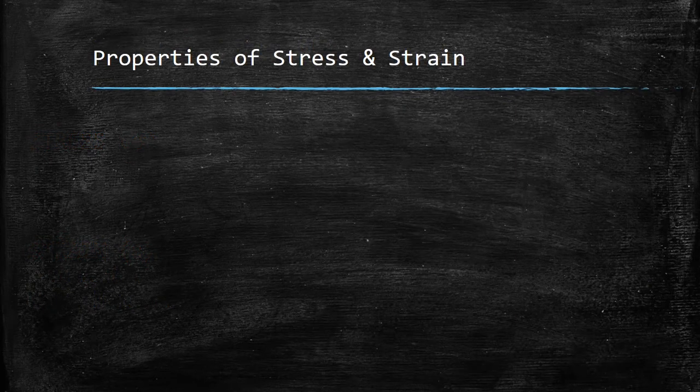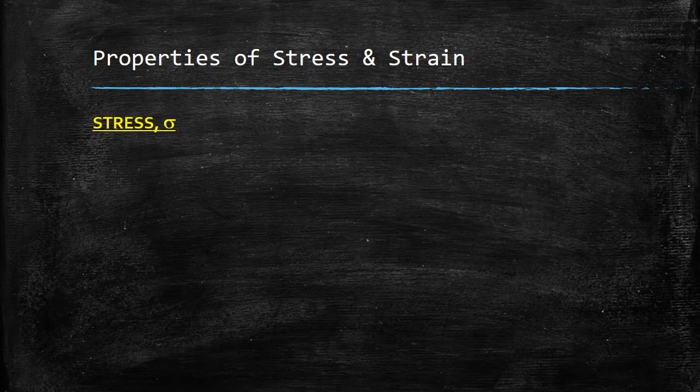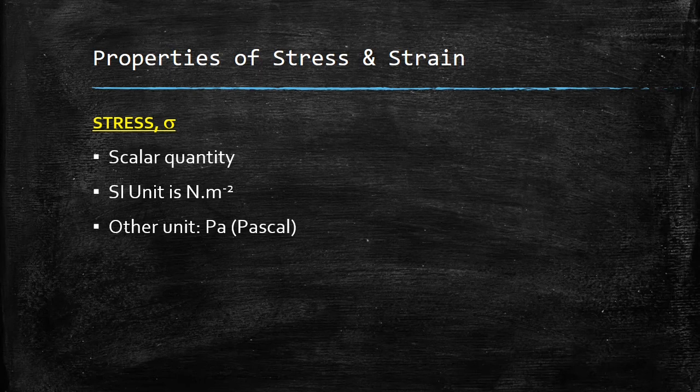Since we now know what are stress and strain, let us now look at the physical properties of stress and strain. Properties of stress are: stress is a scalar quantity, its SI unit is Newton per meter squared, and the other unit for stress is Pascal.